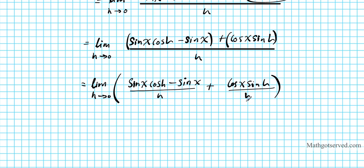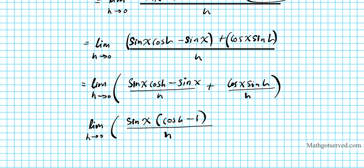Now I'm going to factor out sine x from the first fraction. That gives sine x times (cosine h minus 1) over h. On the right side, I write it as cosine x times (sine h over h), since cosine x is a product of the numerator and can be moved out.